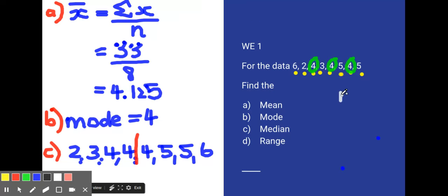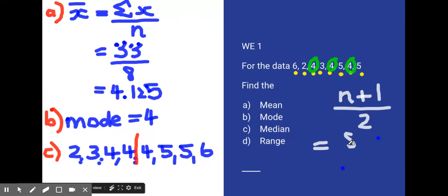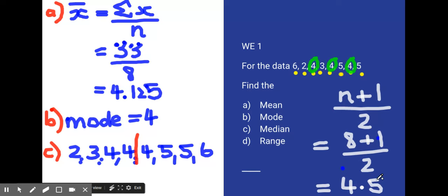The formula says we find the median at the (n+1)/2 result. There are 8 results: 8+1 is 9, 9 divided by 2 is 4.5. So my median is at the 4.5th result.